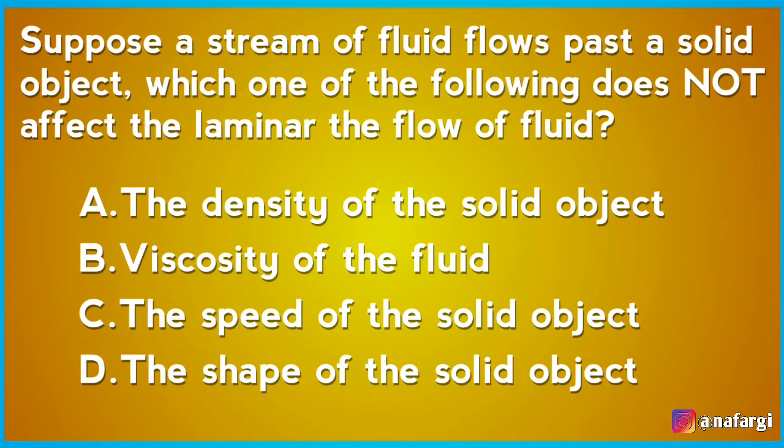Suppose a stream of fluid passes a solid object — which one of the following does NOT affect the laminar flow of the fluid? A: The density of the solid object. B: The viscosity of the fluid. C: The speed of the solid object. D: The shape of the solid object. The density of the solid object does not affect laminar flow — so the answer is A.